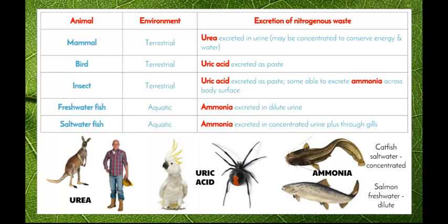Birds, which are also terrestrial organisms, excrete uric acid — it is actually excreted as a paste. That's the bird poo consistency where it's not a solid and not a liquid, and it does have acidic properties. If you get bird droppings on your car, you want to remove them as quickly as possible so they don't eat away at the paint. Insects, also terrestrial, excrete uric acid as a paste as well, and some insects are also able to excrete ammonia across their body surface, depending on their size.